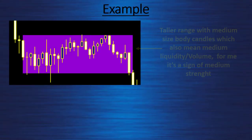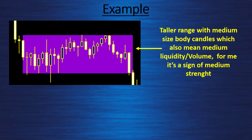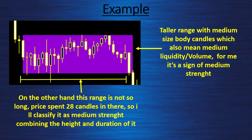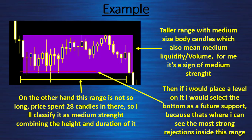Another example: this is a taller range with medium-sized body candles, which also means medium liquidity or volume — for me, a sign of medium strength. On the other hand, this range is not so long; price spent 28 candles in there, so I classify it as medium strength, combining the height and duration. If I would place a level on it, I would select the bottom as a future support, because that's where I can see the most strong rejection inside this range.